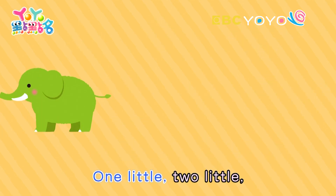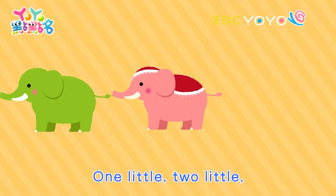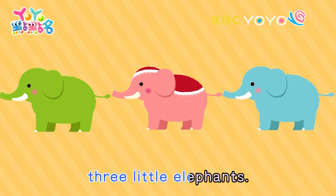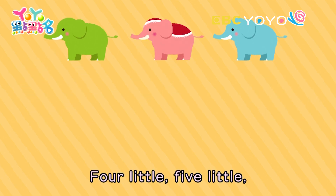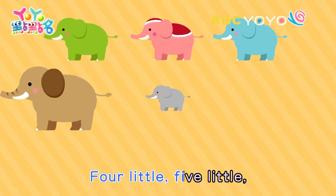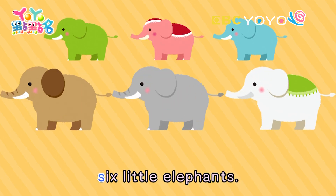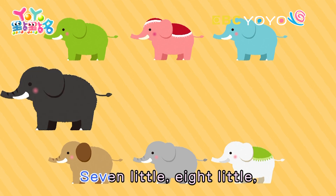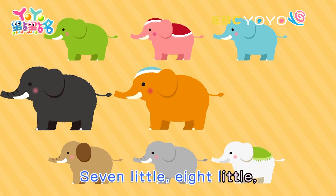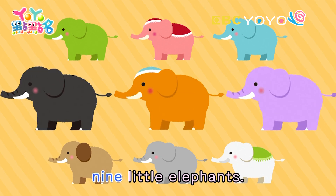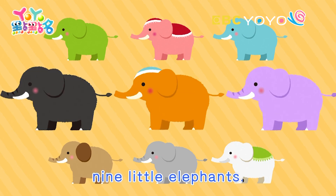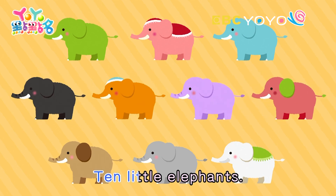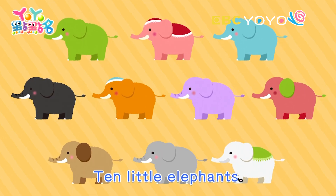One little, two little, three little elephants. Four little, five little, six little elephants. Seven little, eight little, nine little elephants. Ten little elephants.